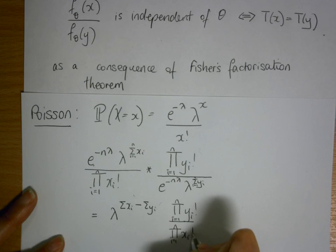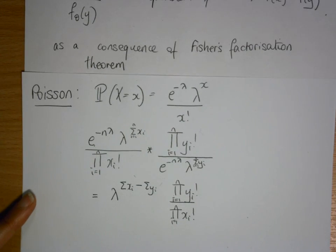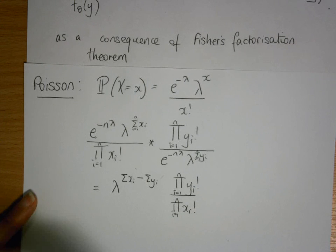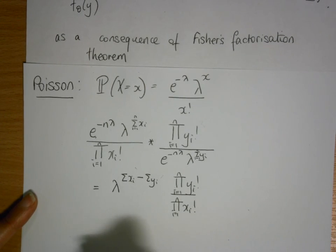divided by the product i equals 1 to n of xi factorial.